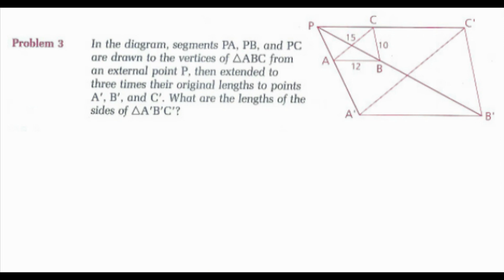So AB, 12 times 3, would give me a side length A'B' of 36. CB is 10. 10 times 3 would give me a side length of 30. And then 15 times 3 would give me a side length of 45. So my side lengths are 30, 36, and 45.